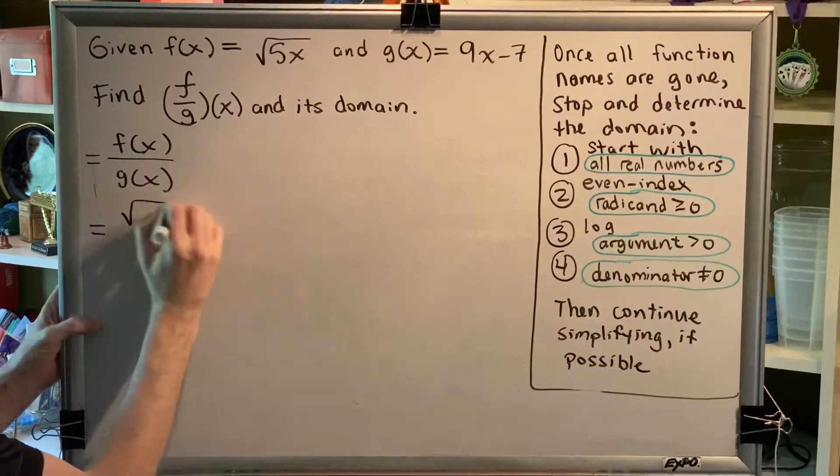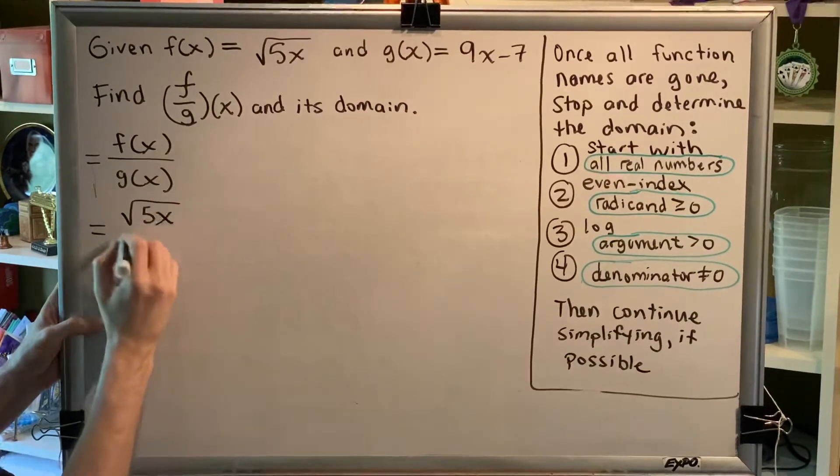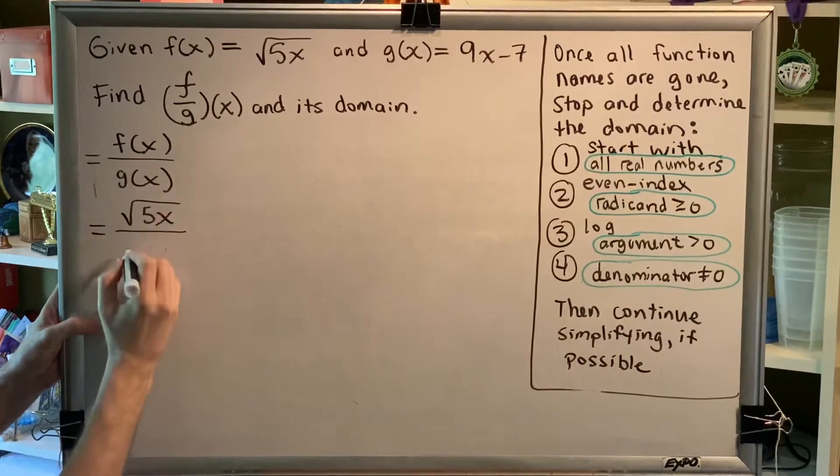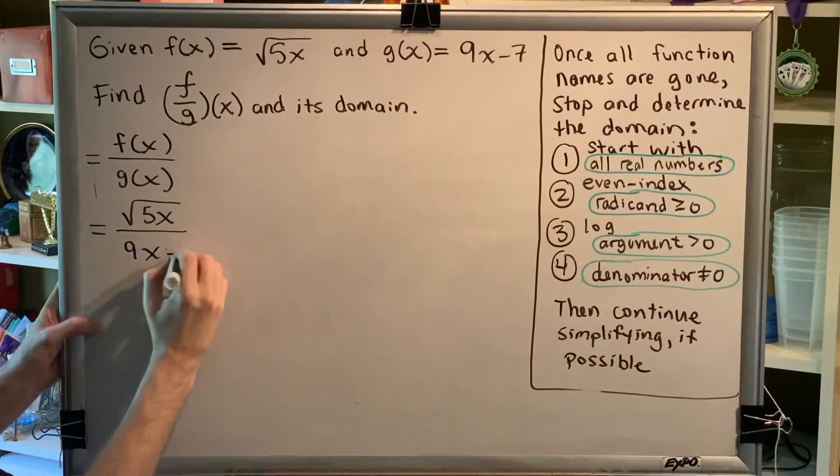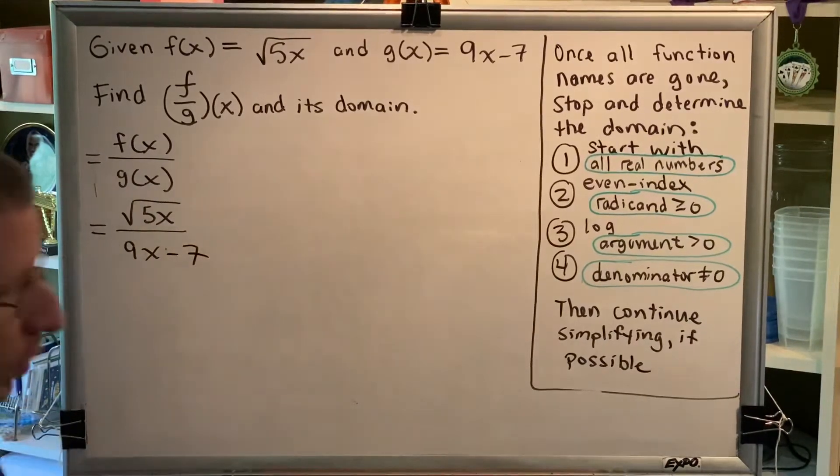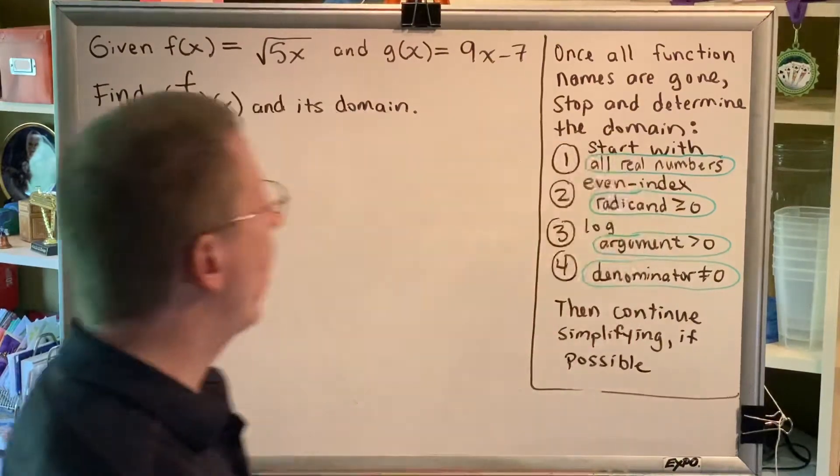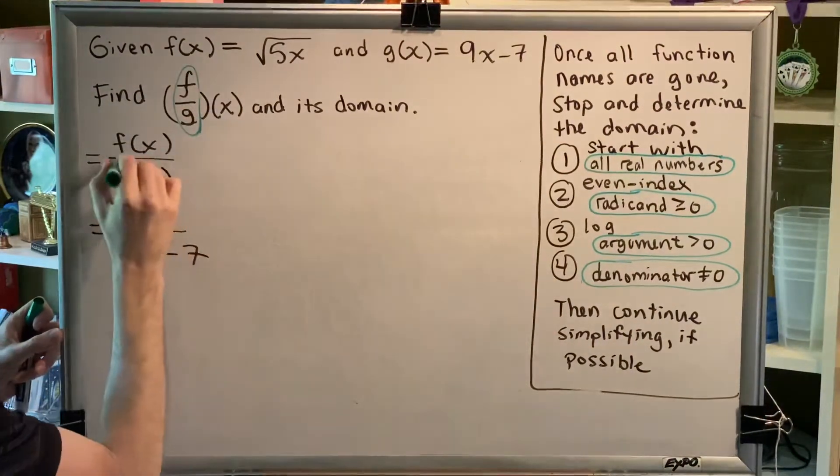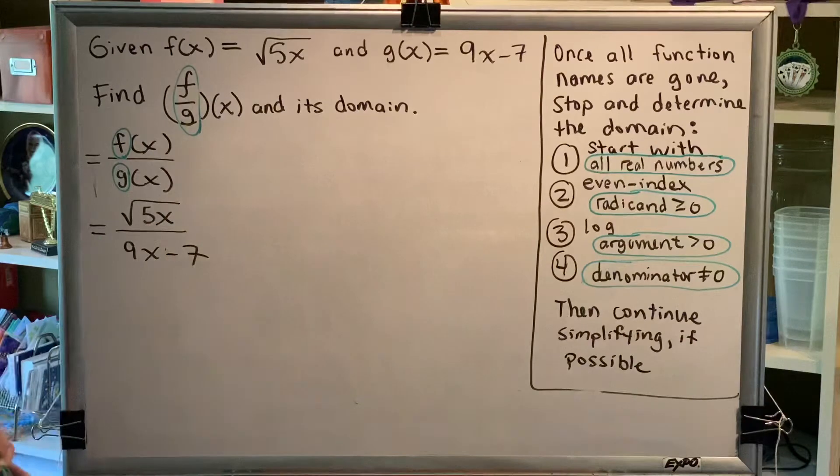We know that f(x) is equal to the principal square root of 5x and g(x) is equal to 9x minus 7. This is the first moment in my problem when all of my names have been removed from my problem solution.